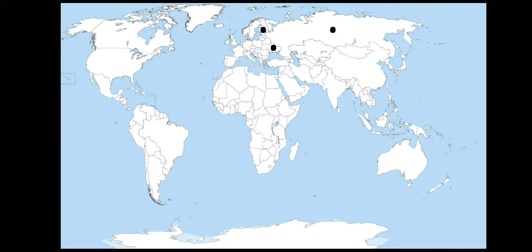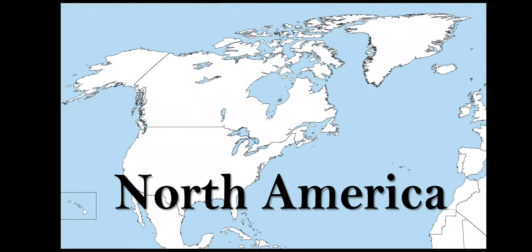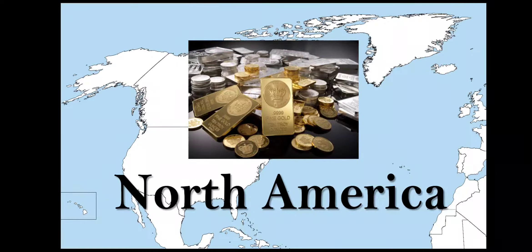In North America, the mineral deposits are located in three zones: the Canadian Shield region north of the Great Lakes, the Appalachian region, and the mountain ranges of the west. Iron ore, nickel, gold, uranium and copper are mined in the Canadian Shield region, while coal is found in the Appalachian region.